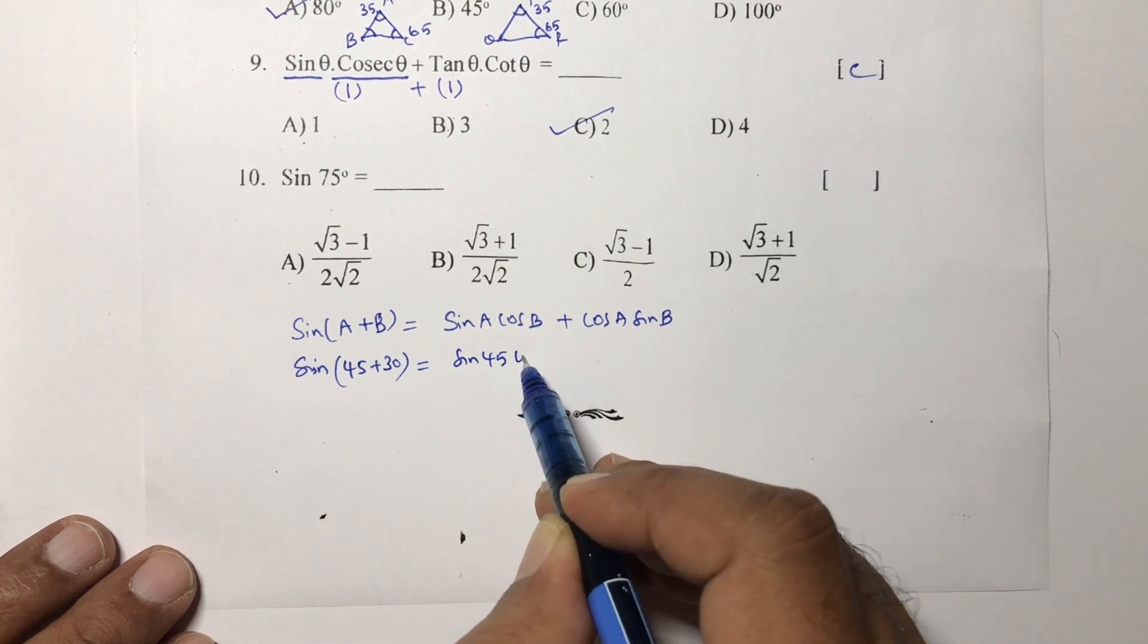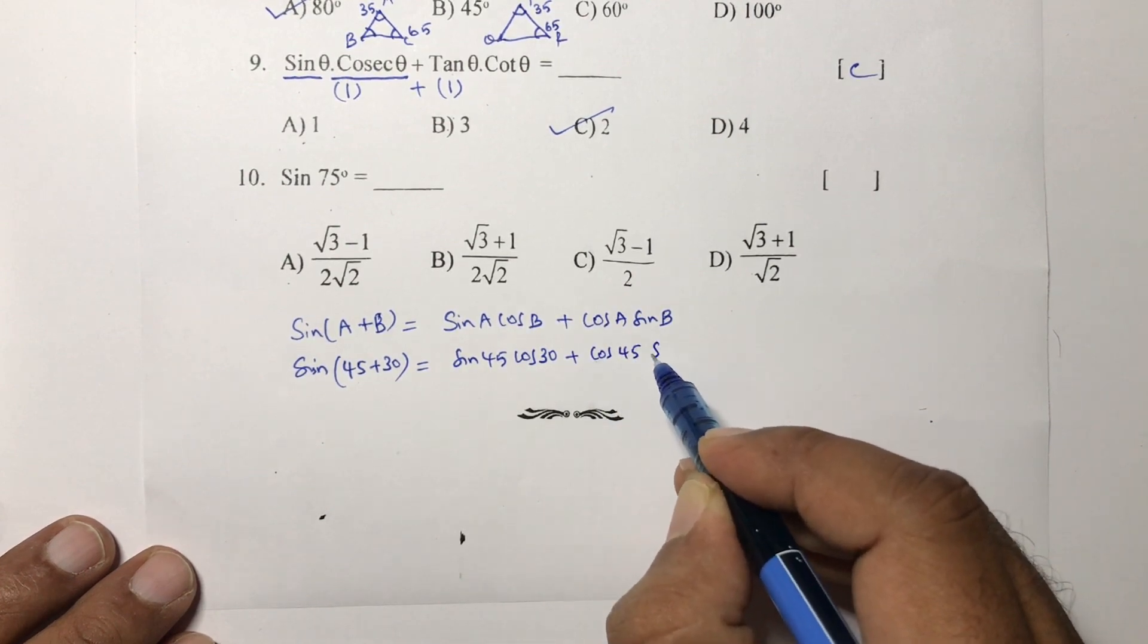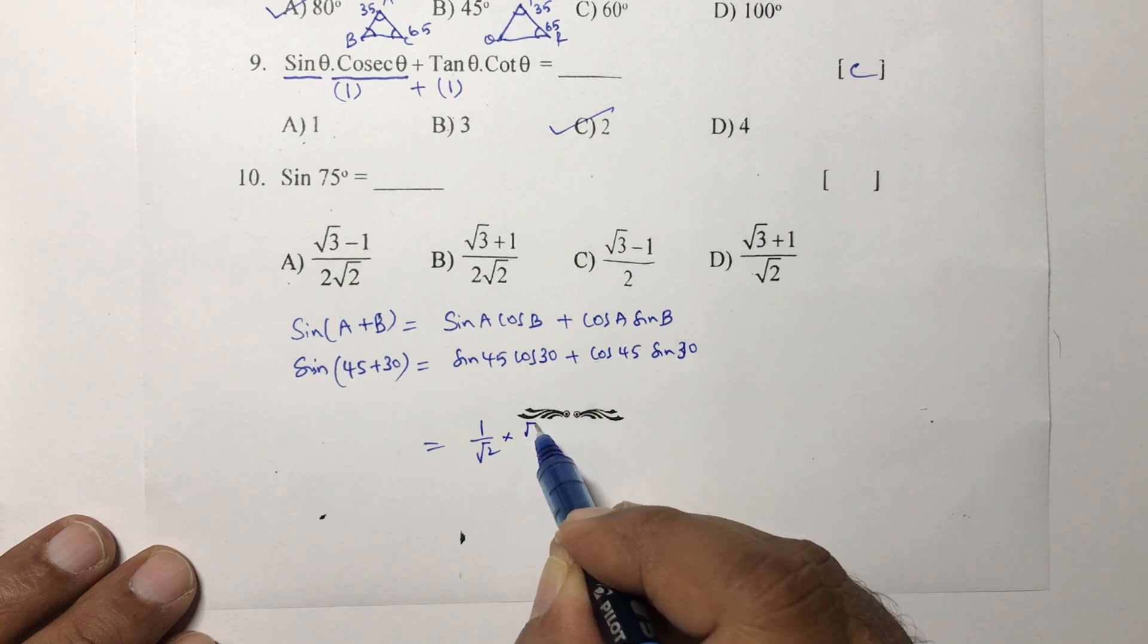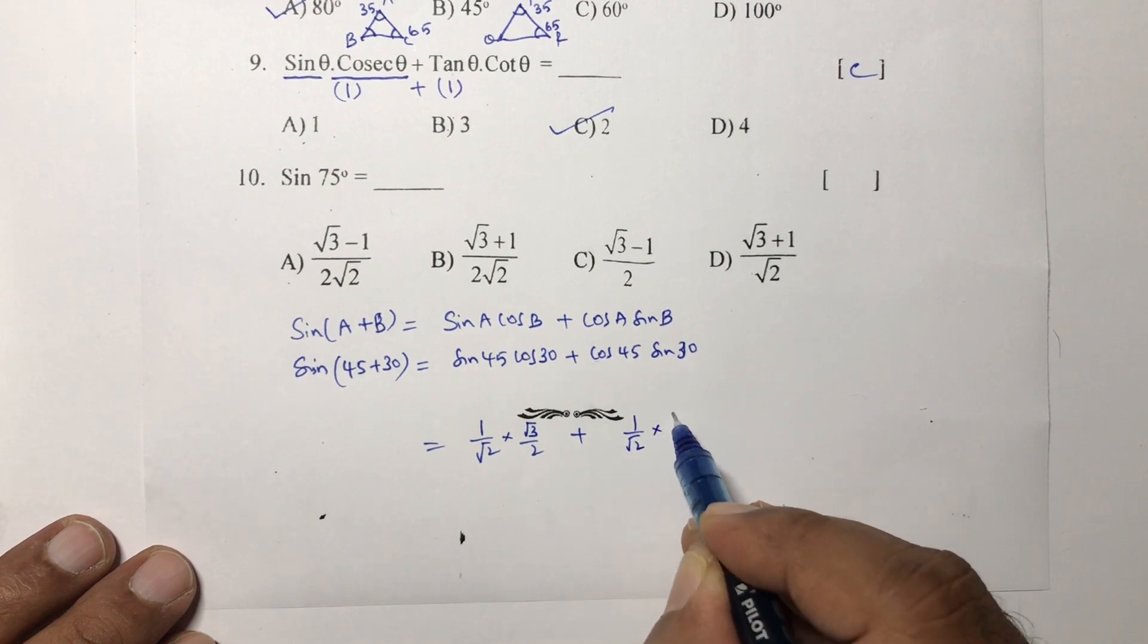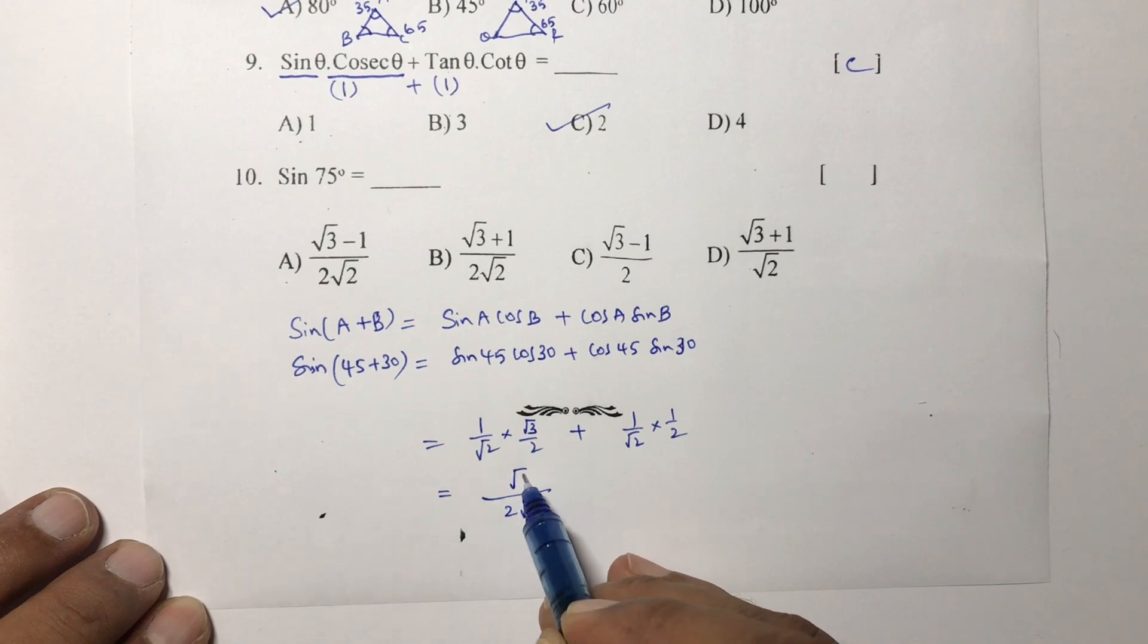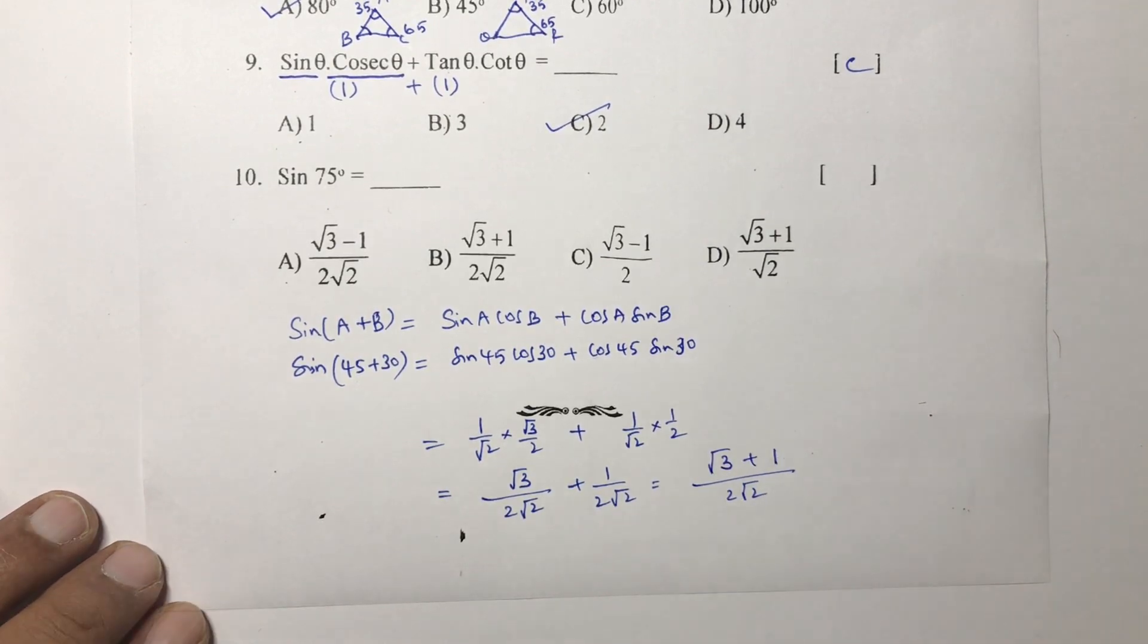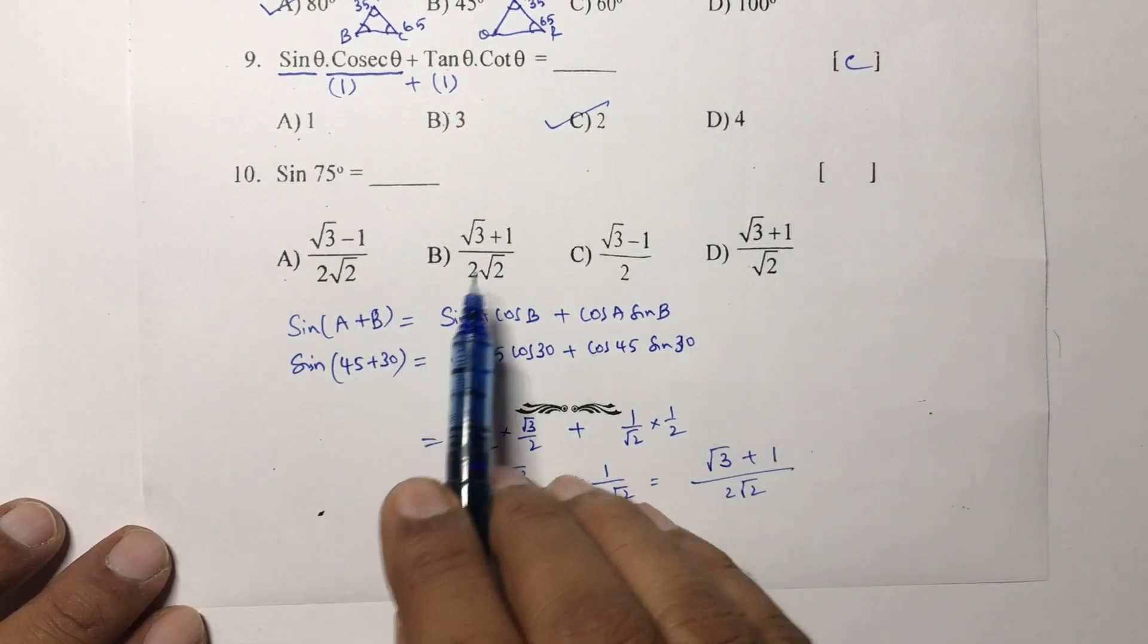Sin 45 is 1 by root 2, cos 30 is root 3 by 2, plus cos 45 is 1 by root 2, sin 30 is 1 by 2. LCM is 2 root 2. Root 3, 1 into 1 is 1. LCM is 2 root 2, if we take LCM, root 3 plus 1. So root 3 plus 1 by 2 root 2. The correct option is B.